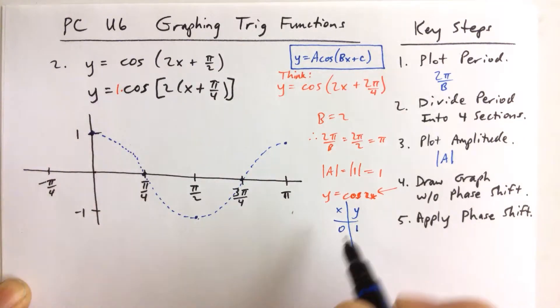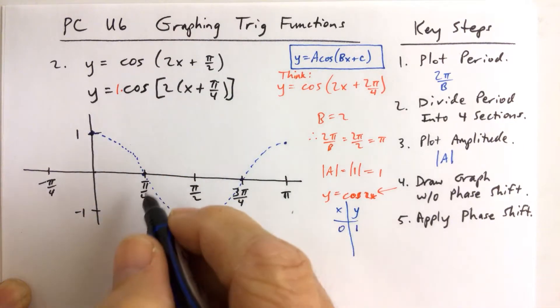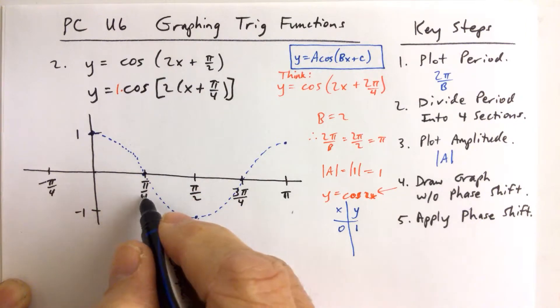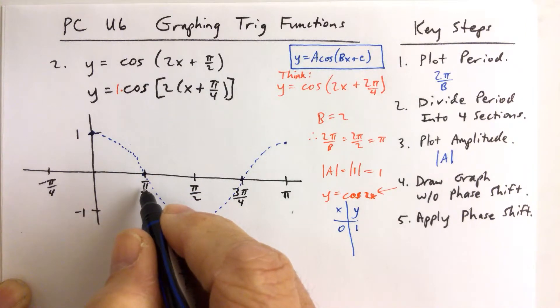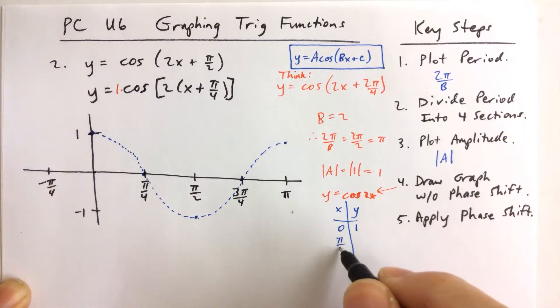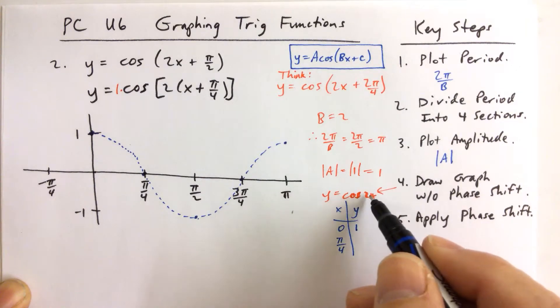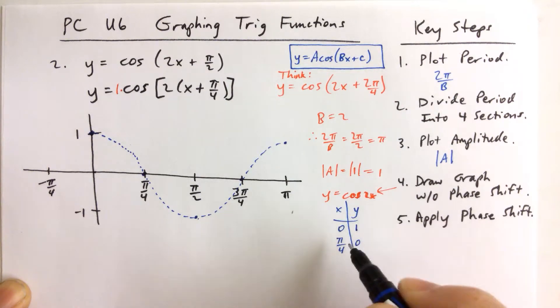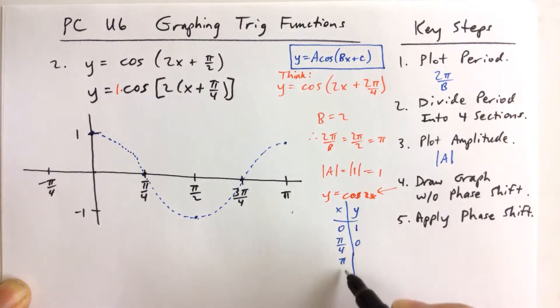And then if you want to find this value here, you plug in pi over 4. You plug in the next x coordinate in for x, and the cosine of 2 pi over 4 is the cosine of pi over 2, which is 0.